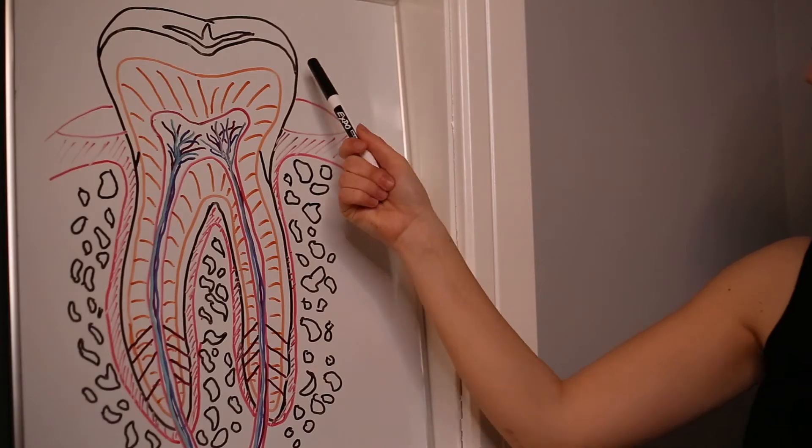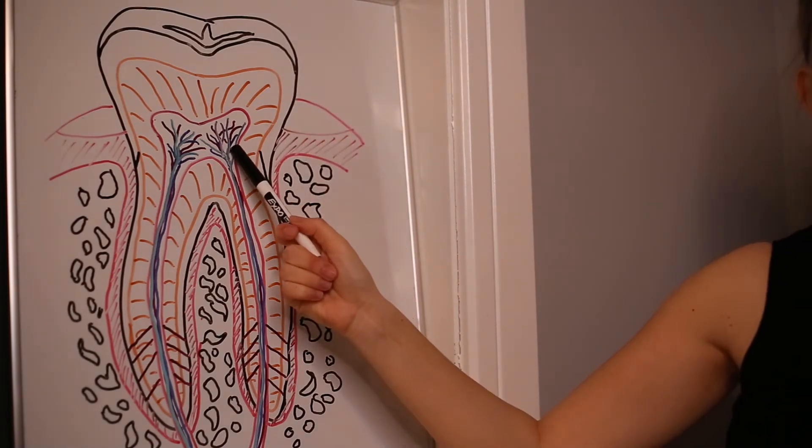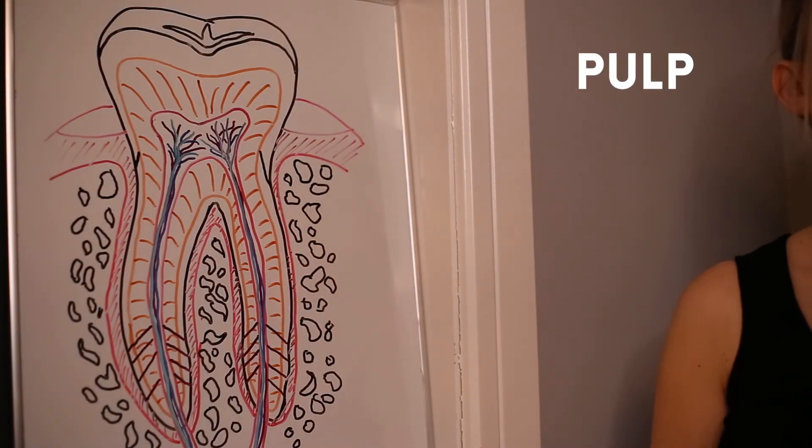Okay, moving inwards. So we've got the enamel, we have the dentin, and then we have something called the pulp. Now this is where we have all of our vitality of the tooth. So a pulp that doesn't have a tooth or has been root canal treated, we call it non-vital or non-living, meaning that we took this out.